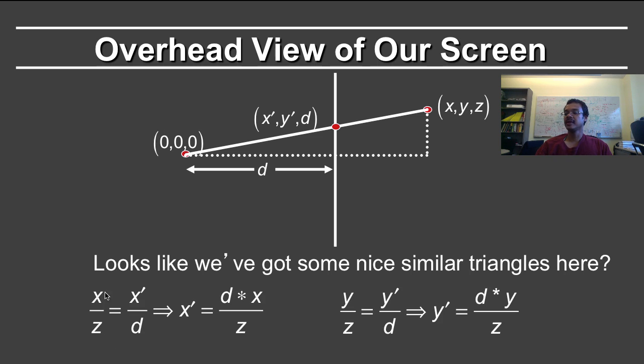So just bringing this up here, you can say, I just wrote it the other way, I said d by x prime, but one can do it, write it in this form. You have x prime is equal to d times x by z, and y prime is equal to d times y by z.